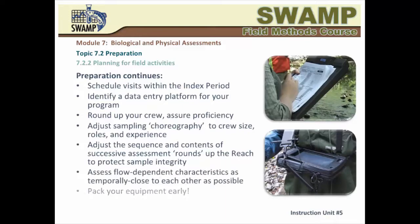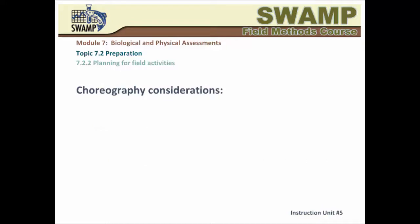This includes getting the field crew trained and comfortable with the procedures, checking out the data entry and processing platforms available to your program, and making decisions about how the data will be captured in the field — into hard-copy data sheets or directly into a field computer. Generally, try to do things in an order that preserves your items of interest. For example, collect biological samples quickly in a dedicated round and process them immediately to avoid deterioration. Assess in-stream habitat complexity before walking into the habitat plot to collect biological samples.